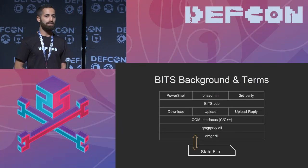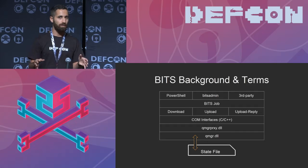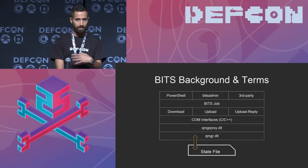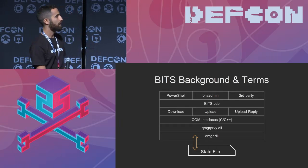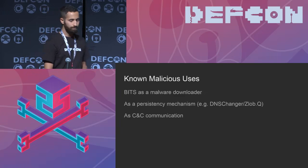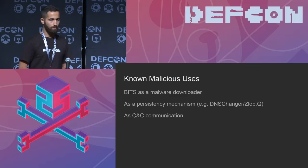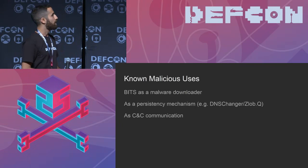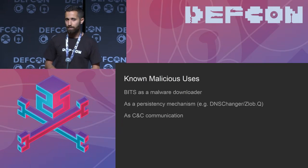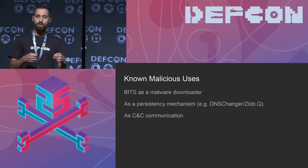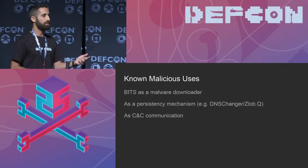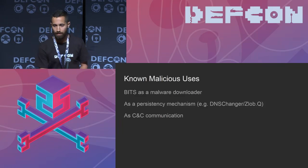Each job that is added has an owner — the user that requested the job — and only this user can then make crucial actions on that job. BITS has many known malicious uses. It is used as a malware downloader, just using PowerShell commandlets, and as a persistency mechanism — it can be used to trigger a job that will re-download the same binary and execute it even months after creation. It is also used to do C2 communication, taking advantage of advanced features such as proxies and authentication, making it a good candidate for malware communication.